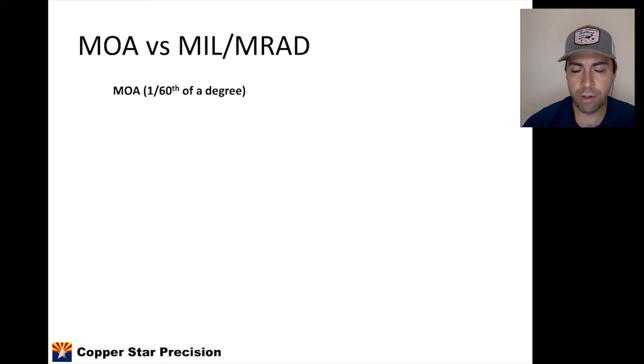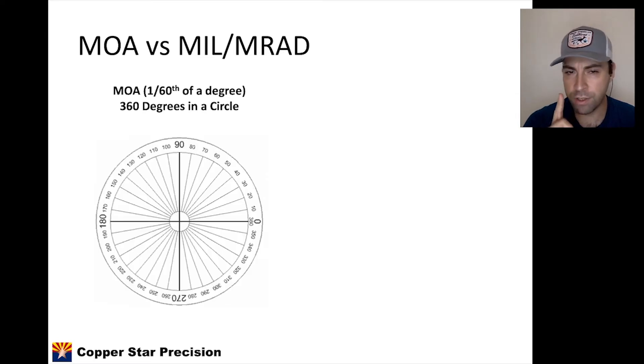An MOA, a minute of angle, is 1/60th of a degree. I think most people are familiar that there are 360 degrees in a circle. So we have 360 degrees. You take one of those degrees, you divide it into 60 parts, and that little sliver of an angle is one minute of angle.